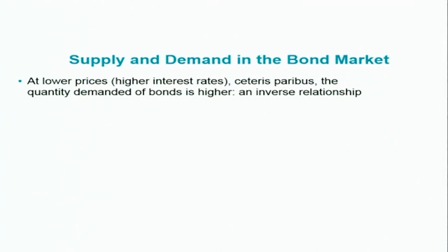We have also seen that the demand curve slopes downward. That means at lower prices — when the price is low, the rate of interest is high — keeping other things remaining constant, the quantity demanded of bonds is higher. When the price is low and the interest rate is high, those who want to lend money and demand bonds will be demanding more because they are getting a high rate of return for their investment. Lower the price, higher will be the quantity demanded — there is an inverse relationship.